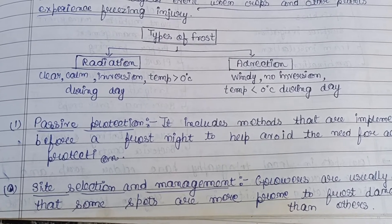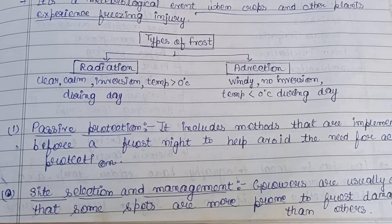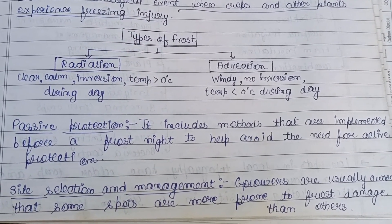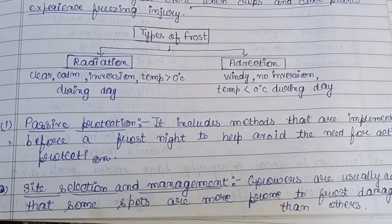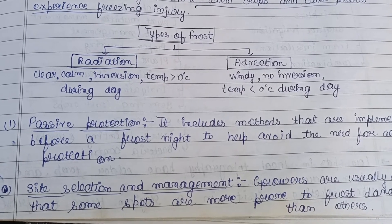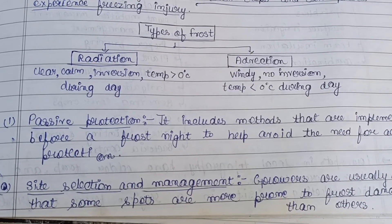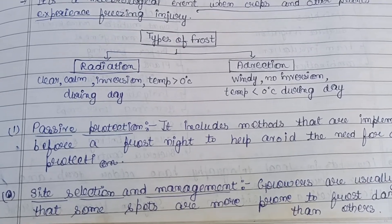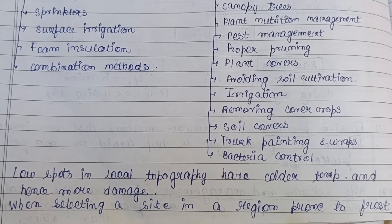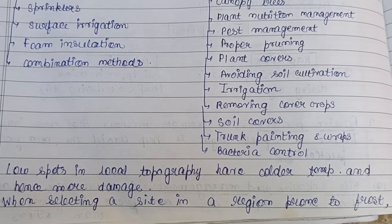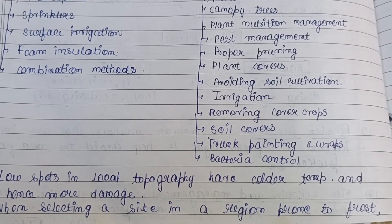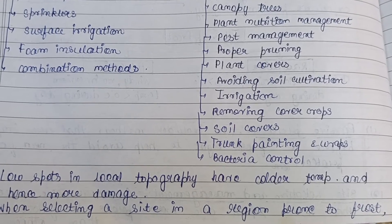The first method under passive protection is site selection and management. Growers are usually aware that some spots are more prone to frost damage than others, so the plant should be grown based on site selection, with proper management. Low spots in local topography have colder temperatures and hence more frost damage. When selecting a site in a frost-prone region, avoid planting on organic soil.